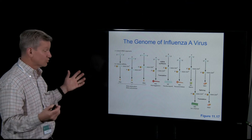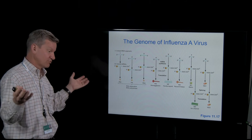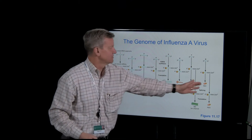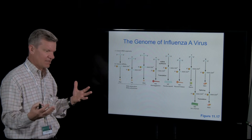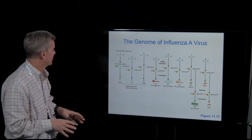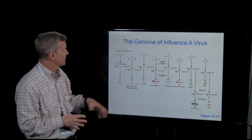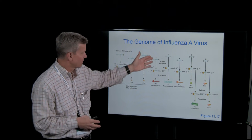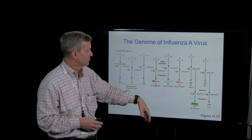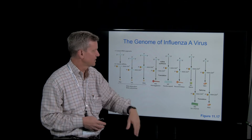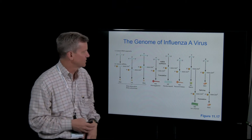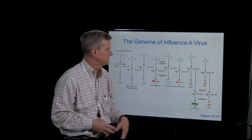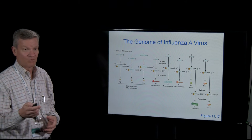You know how we have 23 chromosome pairs — influenza has eight segments, so it's kind of like a mini cell, even though it's a virus. There are three components of this RNA-dependent RNA polymerase. There's an RNA for hemagglutinin, an RNA for the nucleocapsid, an RNA for neuraminidase, an RNA for the matrix protein, some non-structural proteins like proteases, and this M2 ion channel, which is kind of important.